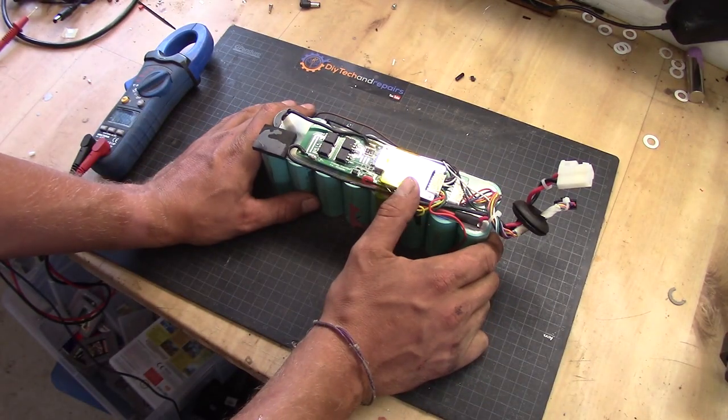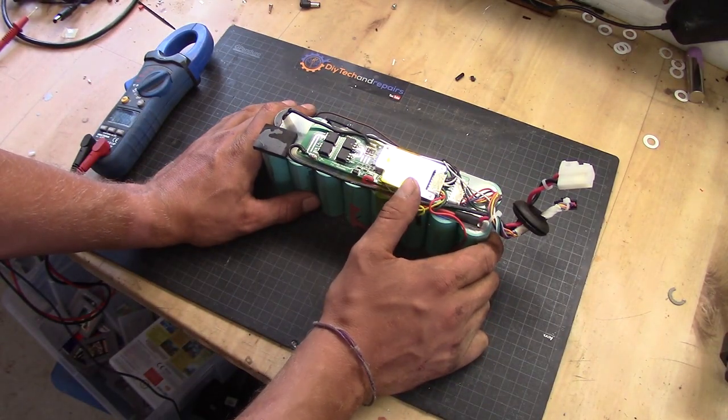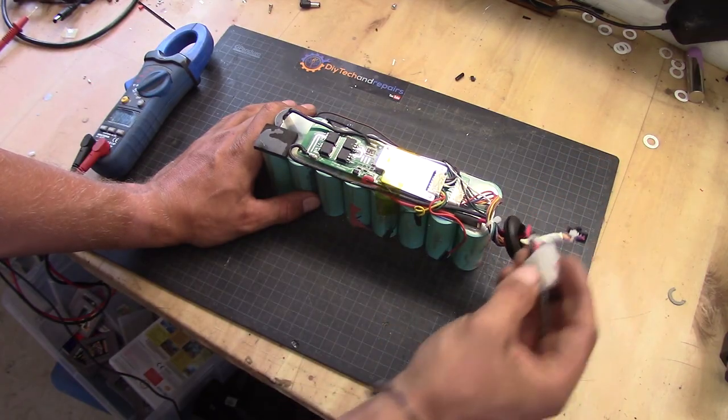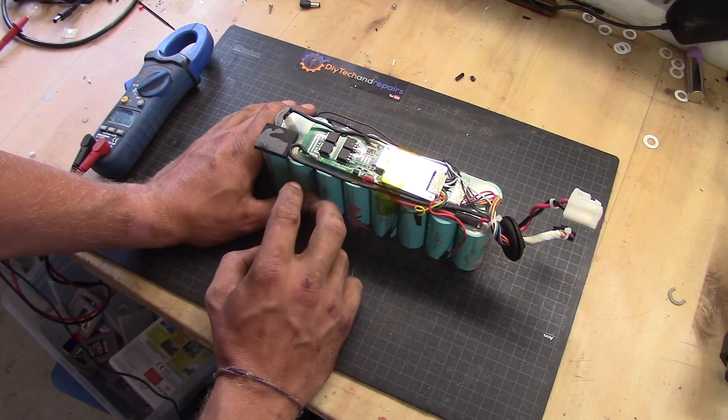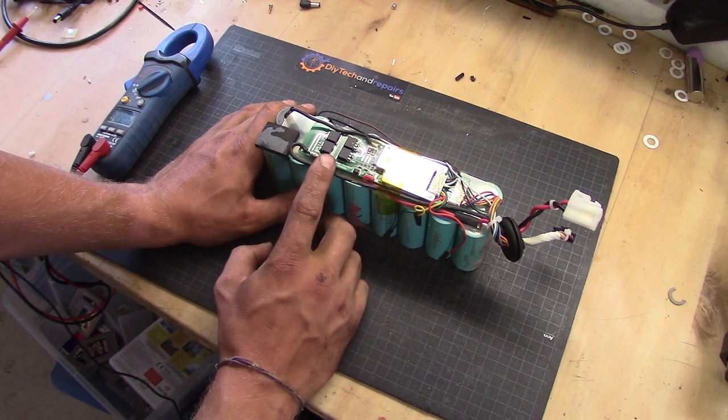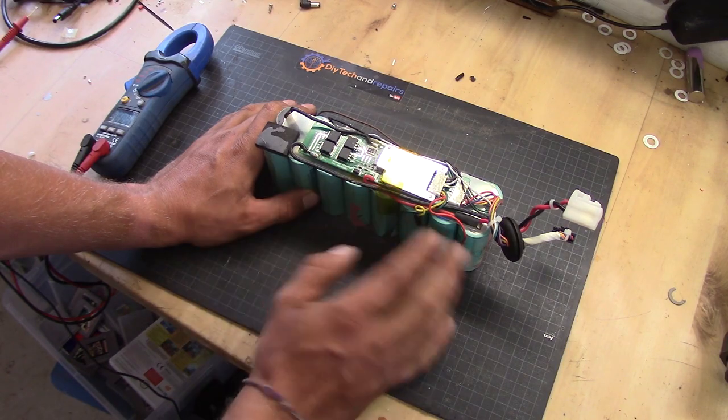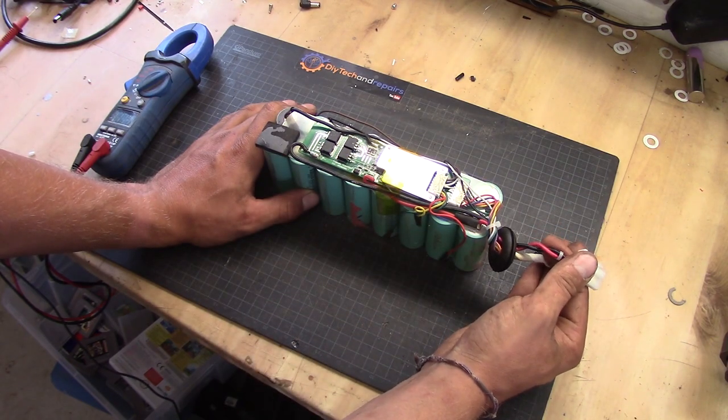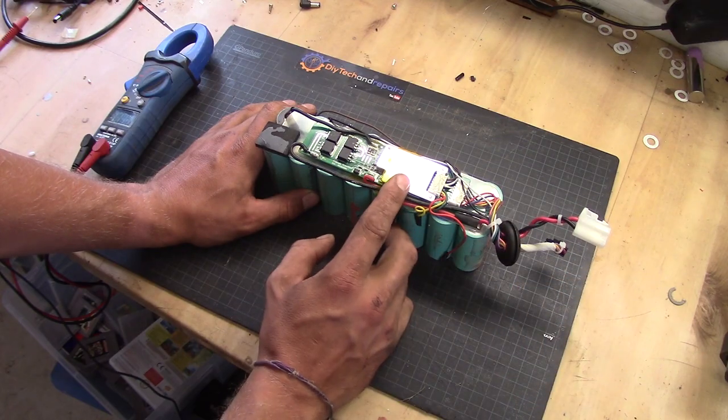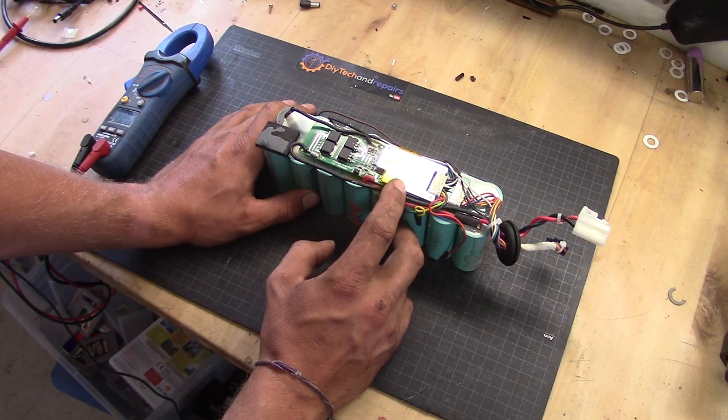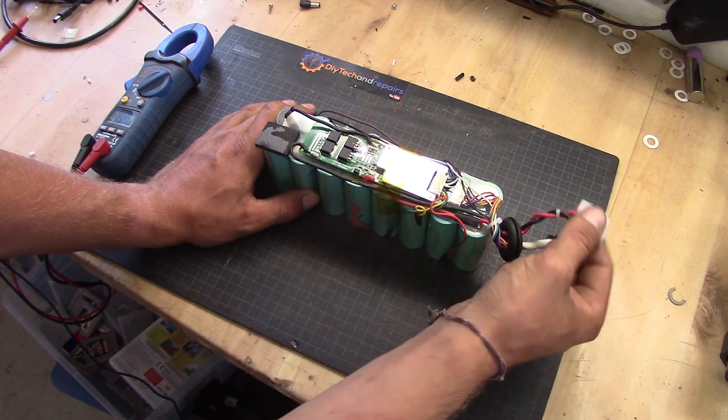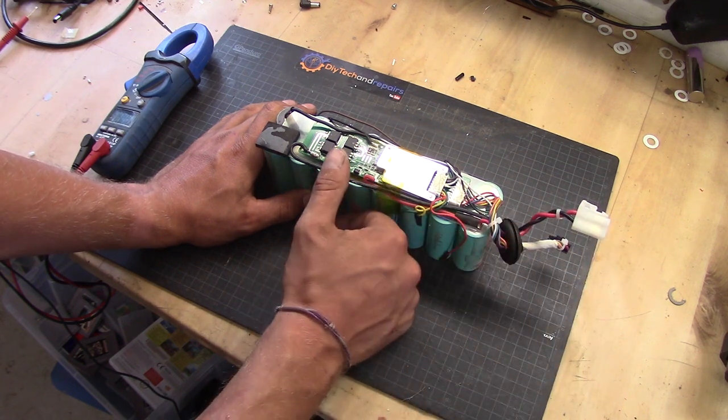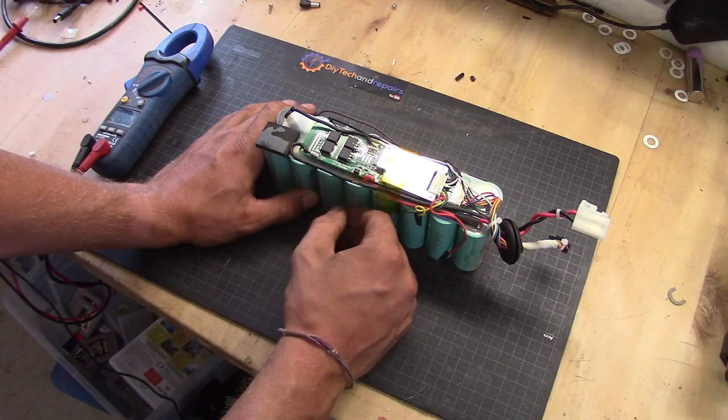The thing is this BMS here will stop the output and input if a cell goes below or above a certain threshold. Below a certain threshold this one I think is around 2 volt will cut off all the charge and discharge functionality. If it goes above 3.65 or 75 volt this one will actually stop the discharge port and start to actually discharging or balancing the pack.